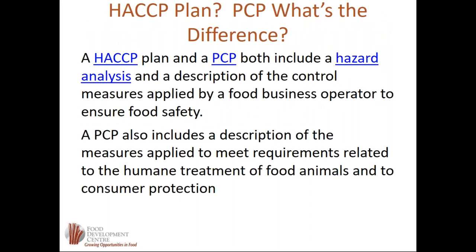The difference between a HACCP plan and a PCP: a HACCP plan is concerned mainly with food safety. A preventive control plan includes hazards associated with food safety, food quality, correct labeling, regulatory requirements, as well as the humane treatment of food animals. Those items are not all required in a HACCP program.